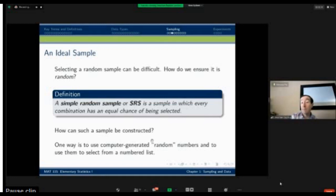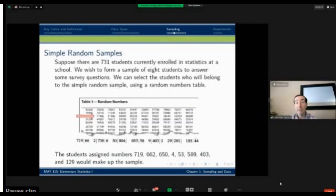I could use the quote-unquote random numbers from a computer-generated random number generator to select the ones in that list. So here's exactly how that would work, just as a simple example. Suppose you are working for the Institutional Research Department for a particular institution, and you find that there are 731 students enrolled in statistics that year at that school. And you want to find a sample of eight students to ask some survey questions about this new technique that we're using to teach statistics.